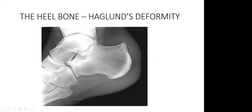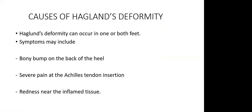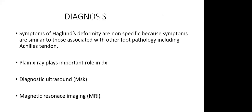Major things causing Haglund's deformity: symptoms may include a bony bump on the back of the heel, severe pain at the Achilles tendon depending on the area involved, and redness near the inflamed tissue — though with darker skin tones you may not appreciate the redness. Diagnosis may not be specific given the complexity of the ankle joint, as symptoms may be similar to other foot pathologies. Plain X-ray may be requested, followed by diagnostic ultrasound as MSK ultrasound, with MRI as a last resort.